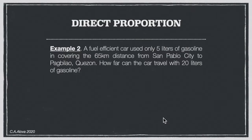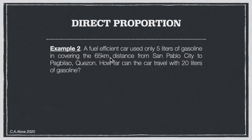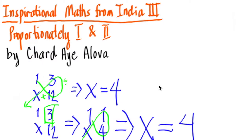Example 2: A fuel-efficient car used only 5 liters of gasoline covering a 65-kilometer distance from San Pablo City to Pagbilao, Quezon. How far can the car travel with 20 liters of gasoline? We can use direct proportion here.